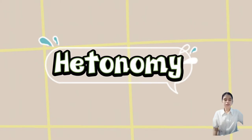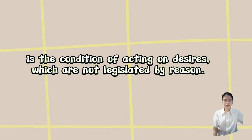Autonomy is how you govern yourself — acting on desires that are legislated by reason. Heteronomy is the condition of acting on desires which are not legislated by reason. For example, the law says don't steal. If you don't steal because you believe it's wrong, that's autonomy at work. But if the only reason you don't steal is because you're afraid of being caught, that's an external force pursuing you, and that is heteronomy.